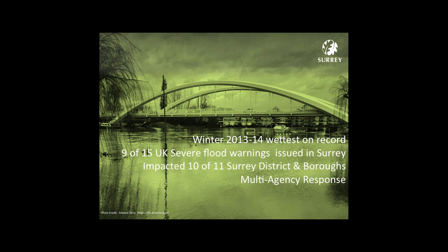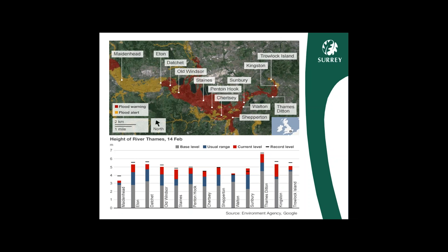We were working alongside other partners. At one stage we had 600 military personnel helping us out and a number of Surrey County Council buildings set up as command centres to respond to that flooding scenario. As a headline figure, since the Thames Barrier was opened in the 1980s, during this winter period of 2013-14, 25% of all the operational closures they've ever had happened during that period.